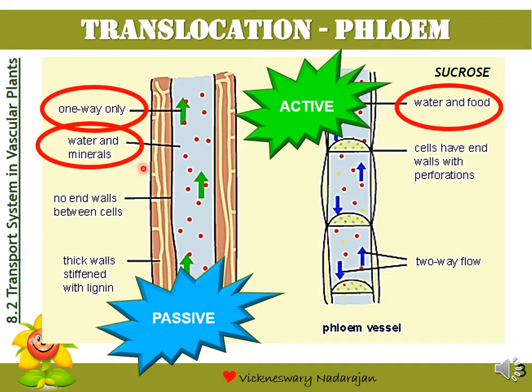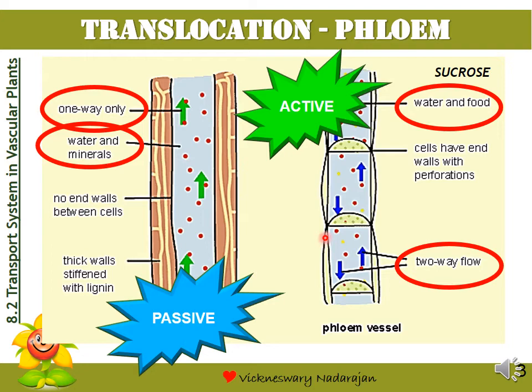The third difference is that in transportation using xylem, it is in one direction — that is from the root to the leaf. Whereas for translocation in the phloem, it is two-way or bidirectional, whereby the sucrose can be transported from the leaf down to the root or from the root up to the leaf. So, in the four hypotheses we are going to learn about, the scientists will try to explain how active transport is involved and how two-way flow occurs.